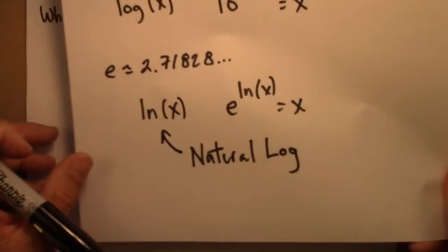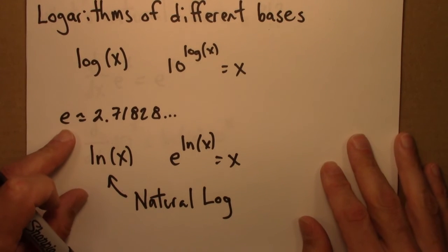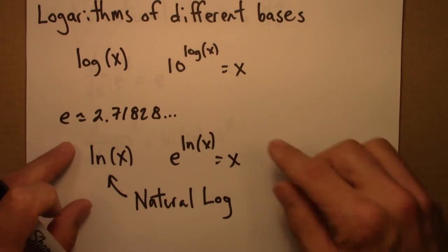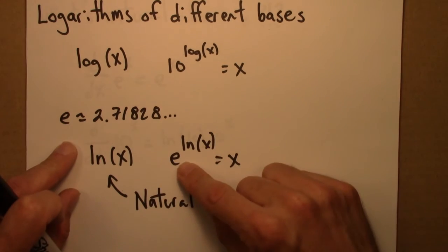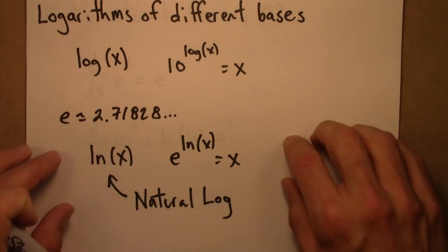If you haven't had calculus, e is probably not natural seeming at all. And that's okay. You can just think of it as another number. I mean, it is another number. And that people like to use as a base for logarithms.